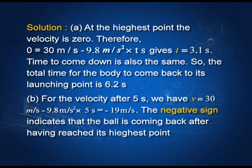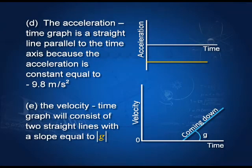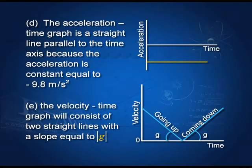You must be careful: the ball goes up, reaches the highest point, comes back, and the velocity of −19 m/s is the velocity when the body is coming down, not going up. At each point of its journey including the highest point where it momentarily comes to rest, the ball experiences a downward acceleration equal to g. The acceleration is constant but negative. The velocity decreases to 0, then increases back to 30 m/s on return, because of conservation of energy.